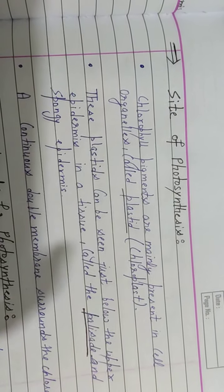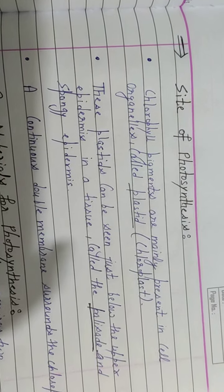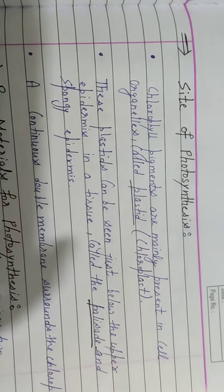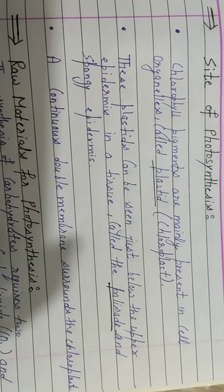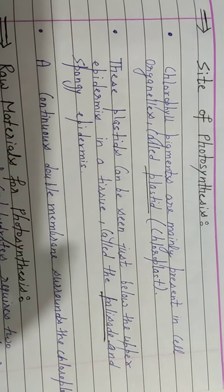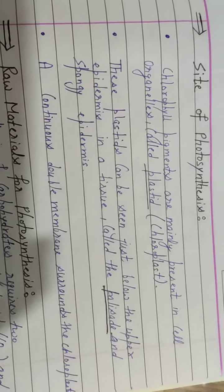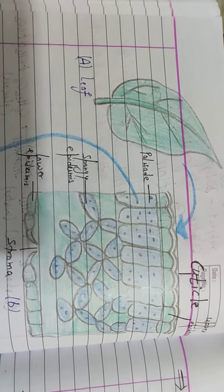Site of photosynthesis is generally green leaves, but specifically, site of photosynthesis is chloroplast which is present in palisade and spongy cells just below the upper epidermis. This chloroplast is a double membranous structure.